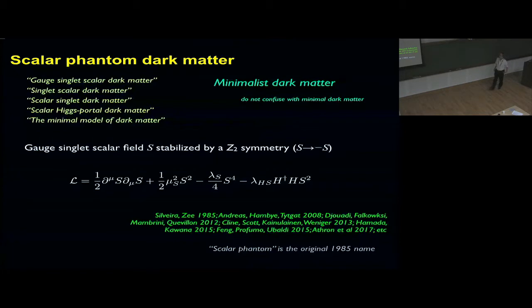Here's an example of another WIMP. It goes back to 1985, Silveira-Zee. This is not supersymmetric. There's a gauge singlet scalar field S that is stabilized by a Z2 symmetry. It is added to the standard model, and it's a Higgs portal model. The interactions through ordinary particles through this quartic term to standard model Higgs fields and to S squared. This model has many names. The original name was scalar phantom. That's why I call it scalar phantom. Nowadays, it may be known as the singlet scalar Higgs model.